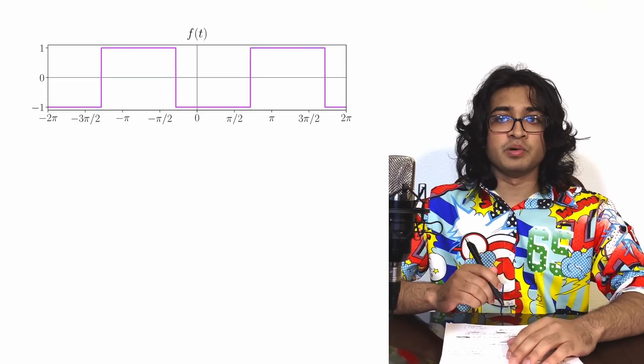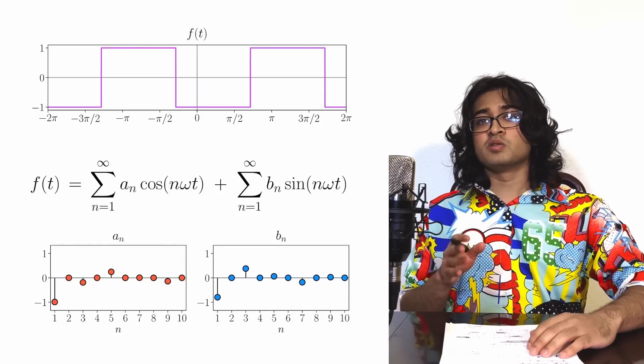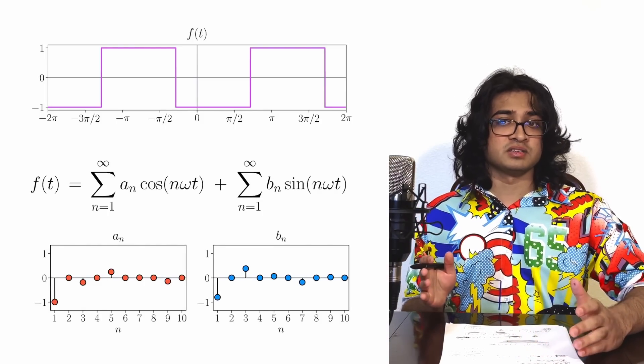Alright, let's now take our refreshed view of the complex numbers and apply it to a classic example, the Fourier series. According to Fourier, any periodic signal can be broken up into sines and cosines. However, we can rework this formulation to give us some insight.